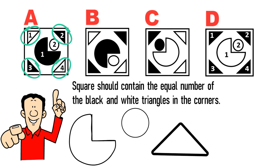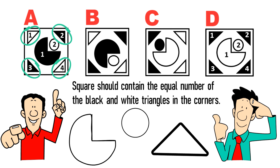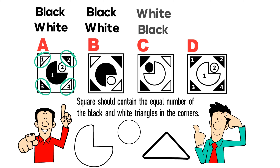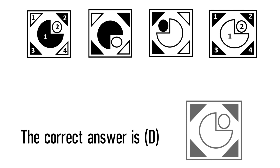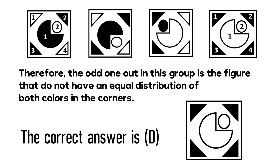Circles in this picture do not have a pattern and their primary goal is to confuse you. Shape A has black-white, shape B black-white, shape C white-black, and shape D white-white. Based on this information, we should ignore the circles and focus on the triangles. The odd shape that doesn't belong to the group is the one that does not have equal distribution of colors in the corners. So the correct answer here is choice D.